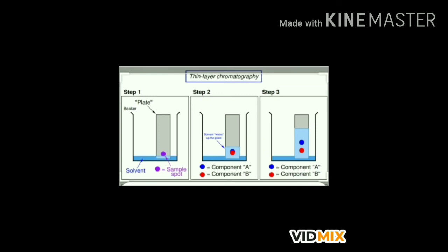As time passes, water seeps up the filter paper carrying the dye with it. As the water rises, it takes along the dye particles. After some time we get different spots on the filter paper, showing that the dye is not a single color. The ink uses water as solvent and the dye is soluble in it. The dye is usually a mixture of two or more colors — the colored component more soluble in water rises faster, and in this way different colors get separated at different positions.